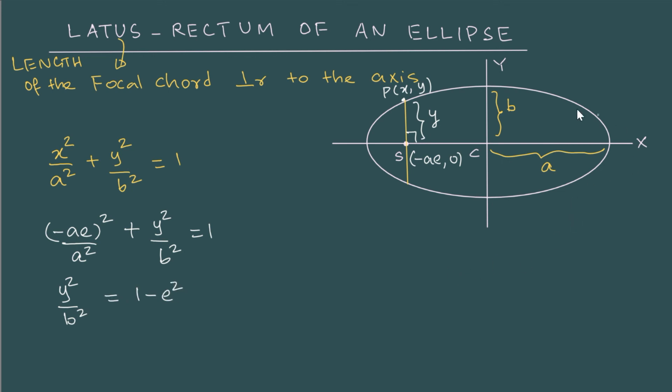Now for an ellipse, another relation which is important is the connection between semi minor axis and the semi major axis. So we should know that b is actually a times square root of 1 minus e square where e is the eccentricity. So from here, we can see that if I square on both sides and then try to get 1 minus e square, we should get b square by a square. So I can substitute that here.